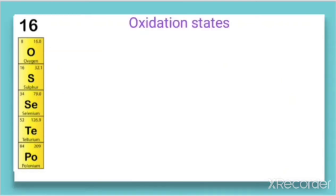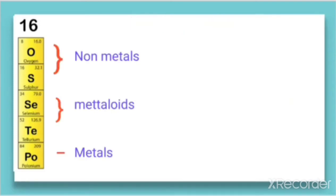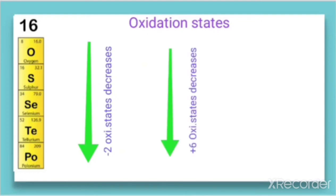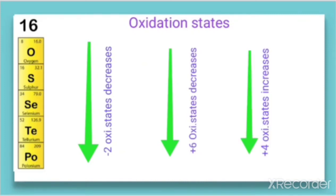When we compare these elements — Oxygen, Sulphur, Selenium, Tellurium, and Polonium — Oxygen and Sulphur are non-metals, Selenium and Tellurium are metalloids, and Polonium is a metal. That means metallic character increases from top to bottom, and therefore the tendency to form a negative oxidation state decreases. So the -2 oxidation state decreases down the group because metallic character increases. But the stability of the +6 oxidation state decreases, while the stability of the +4 oxidation state increases because of the inert pair effect.